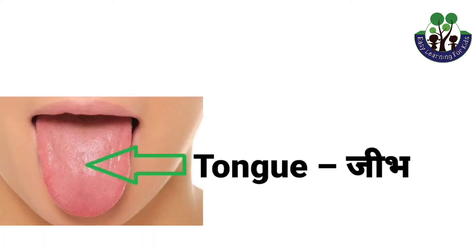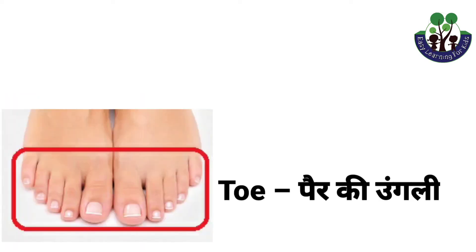Tongue. Tongue means jeep. Toe. Toe means pad ki ungli.